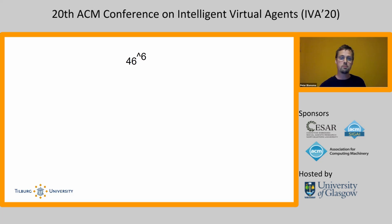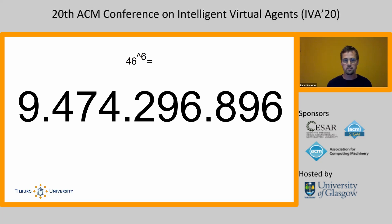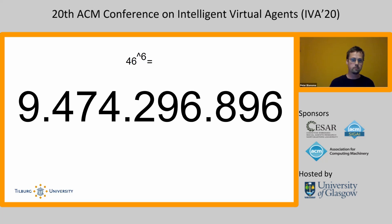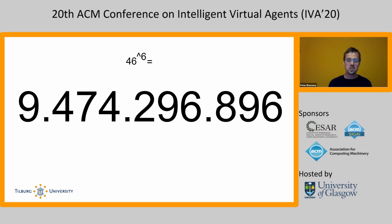So 46 to the power of six gives almost 10 billion, which means that the Facial Action Coding System is in theory able to express almost 10 billion different facial configurations. Of course when we shared this with our partner, they said they couldn't do anything with this number.